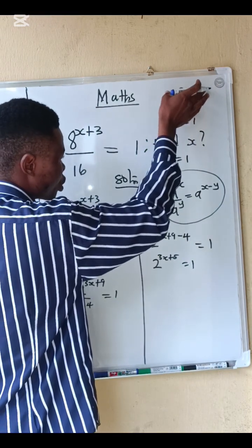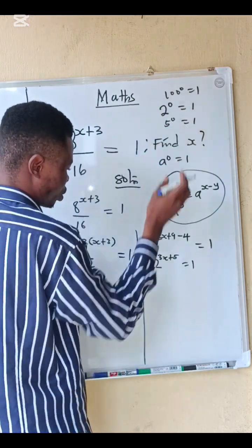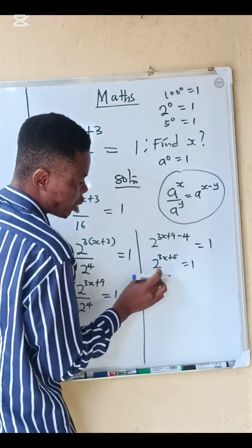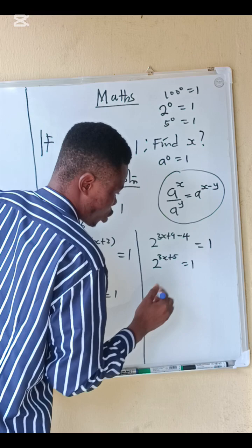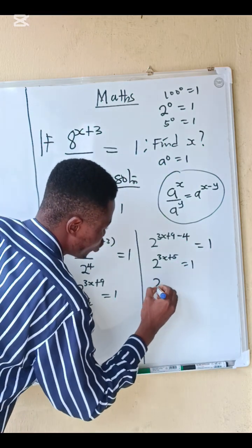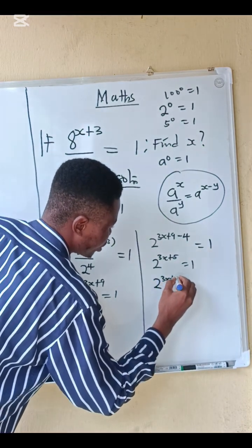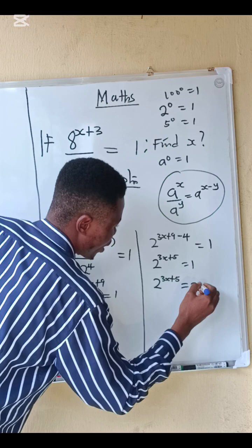I'm going to apply this same knowledge here. Since we have 1, we can say that 2 power 0 gives us 1, so we can have the same base. We now have 2 power 3x plus 5 equals to 2 power 0.